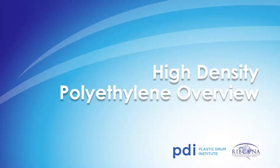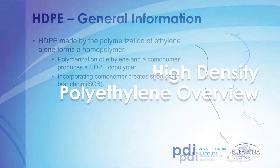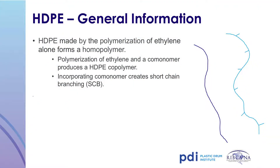Next, we'll discuss the manufacture of high-density polyethylene resin, which is used in the production of plastic drums and IBCs. High-density polyethylene is made by polymerizing ethylene with a metal-based catalyst. If only ethylene is used, that resin type is called a homopolymer. This process results in a very long and straight chain of molecules, as shown on the left of the slide.